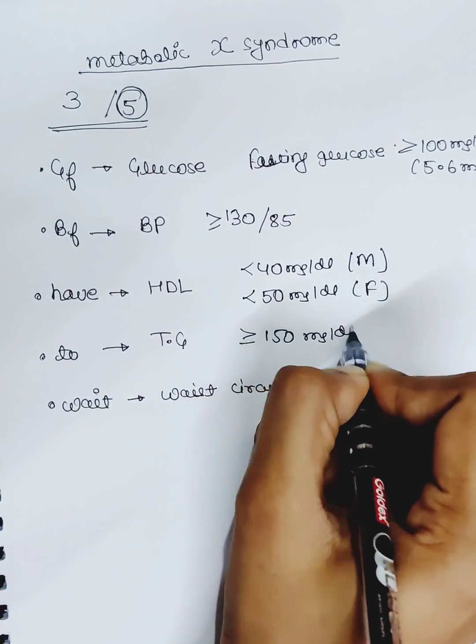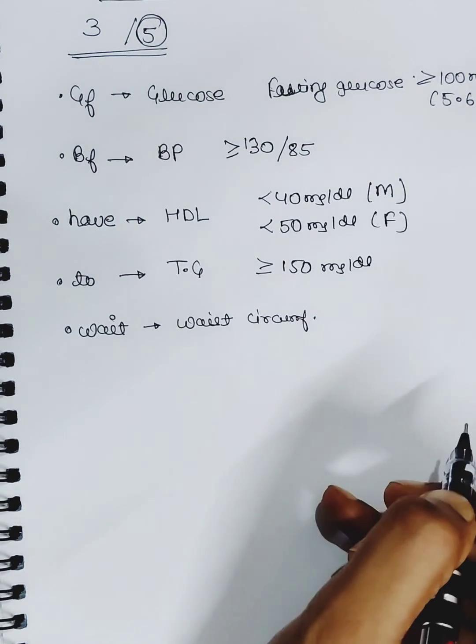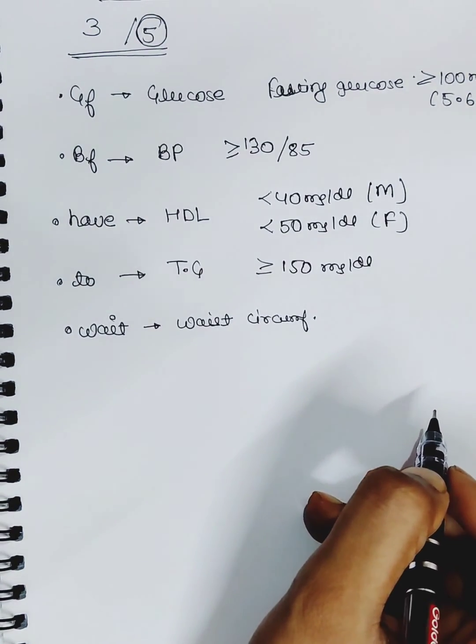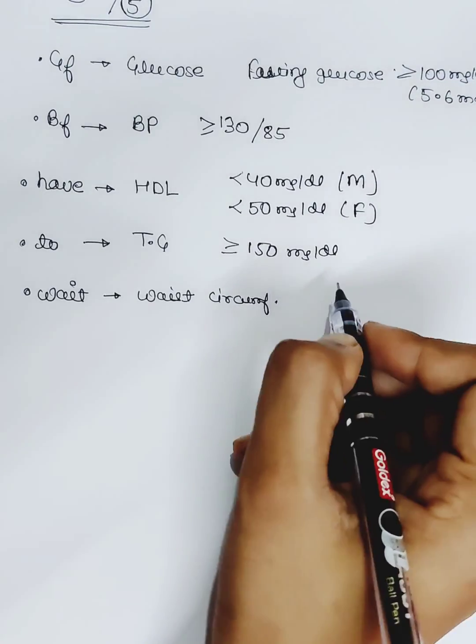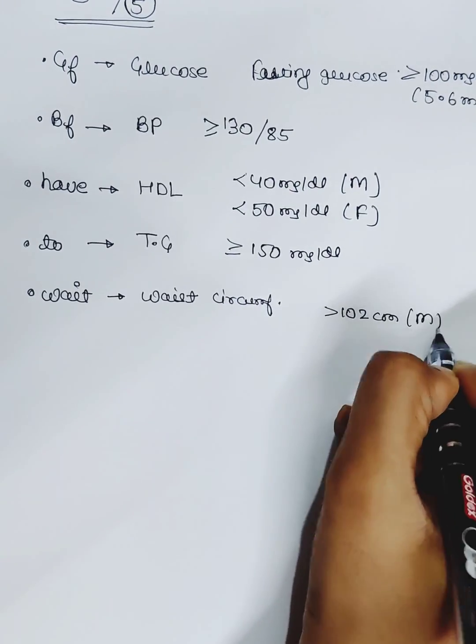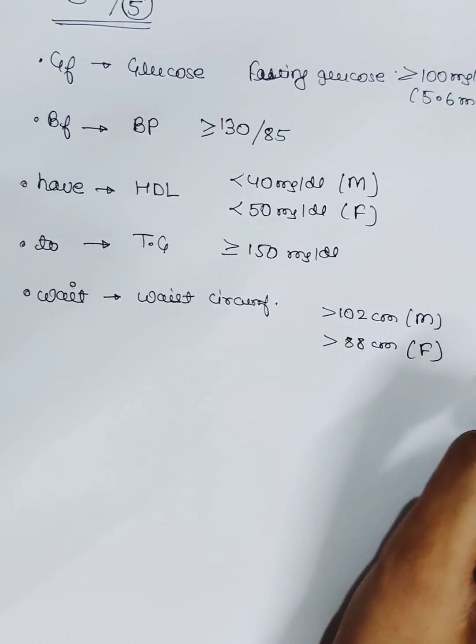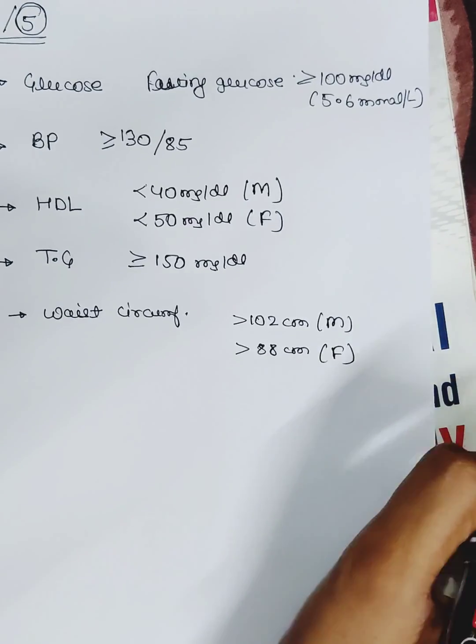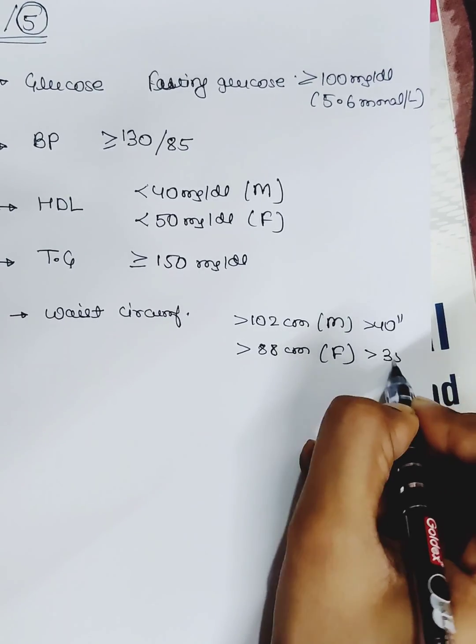Waist circumference differs in different countries depending on ethnicity. The most acceptable definition is more than 102 centimeters for males and more than 88 centimeters for females. In inches, it's more than 40 inches for males and more than 35 inches for females.